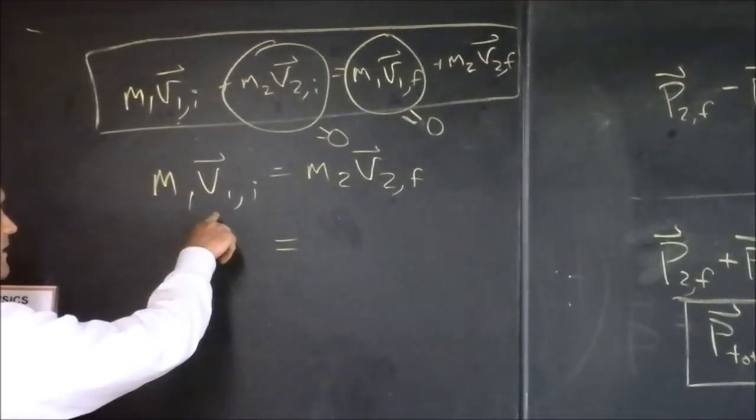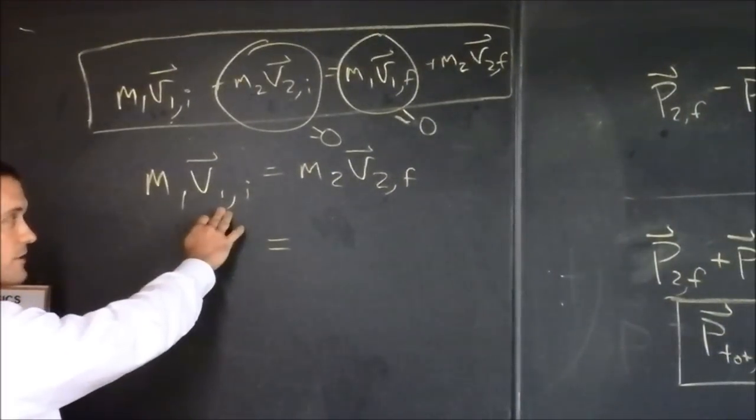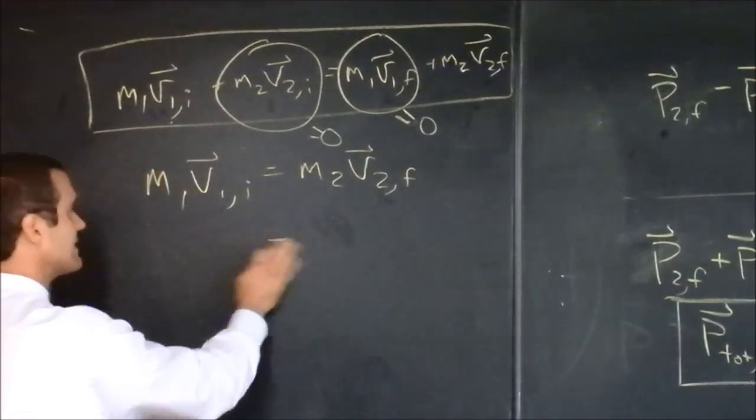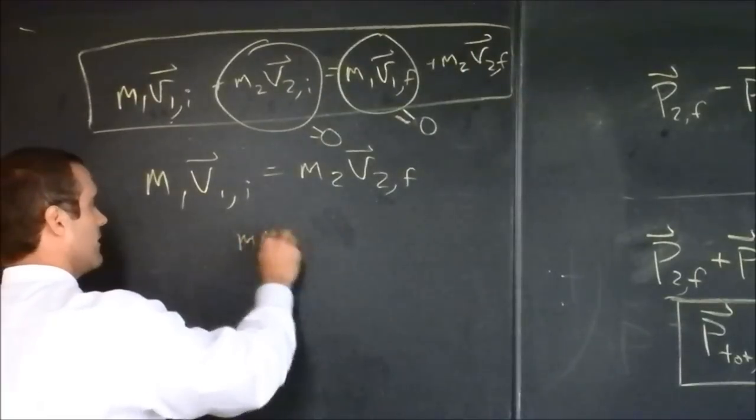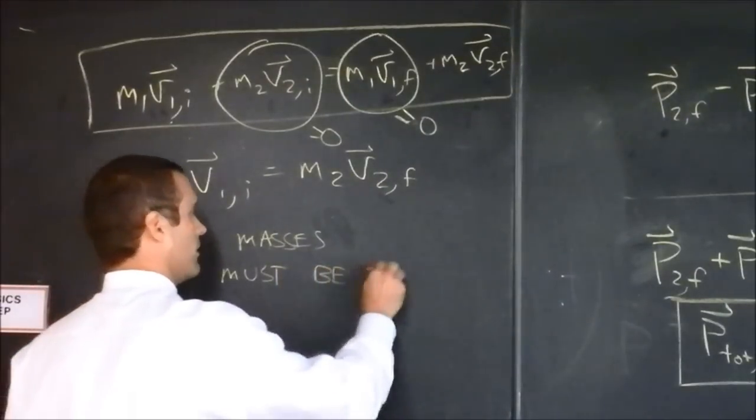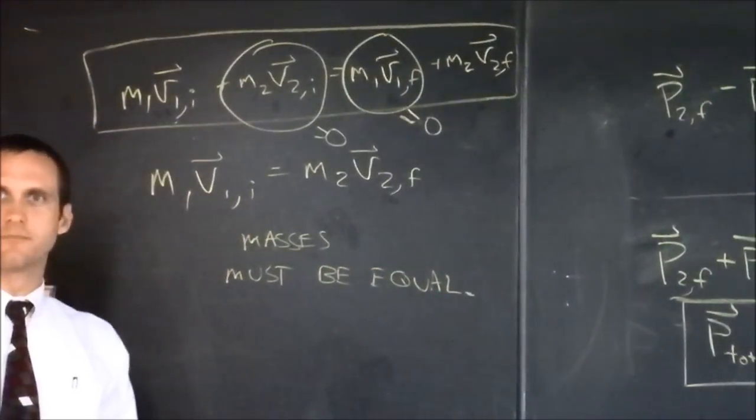I came in with a certain speed, and he left with the same speed. I think that means that our masses must be equal also. Let's see if we can get some more examples going.